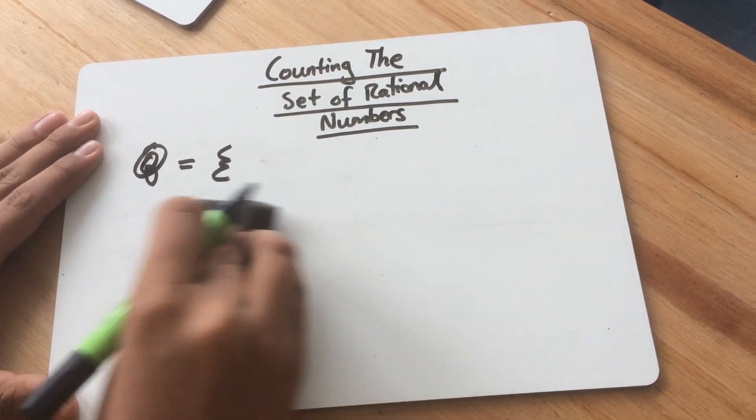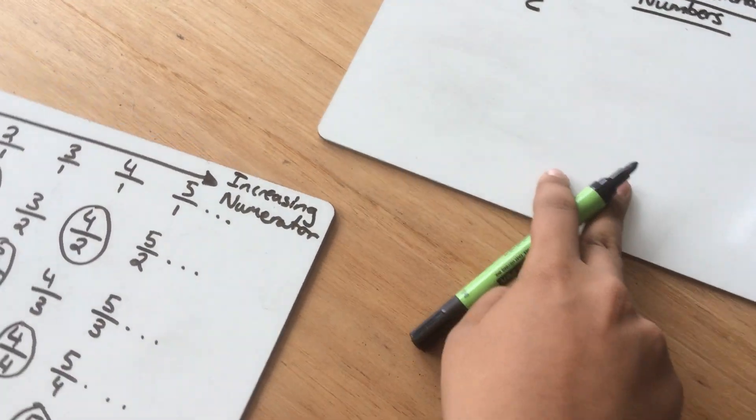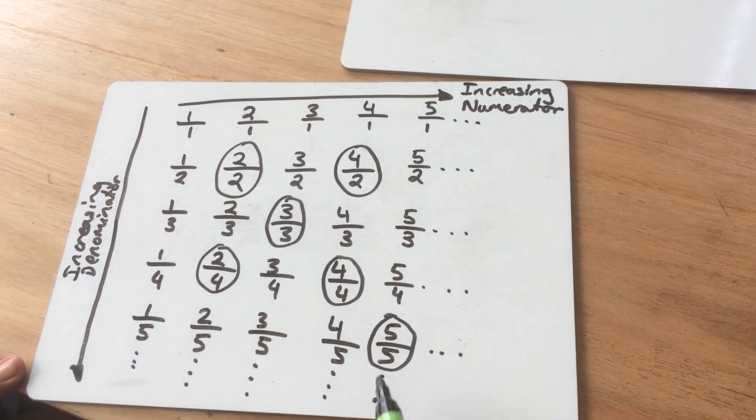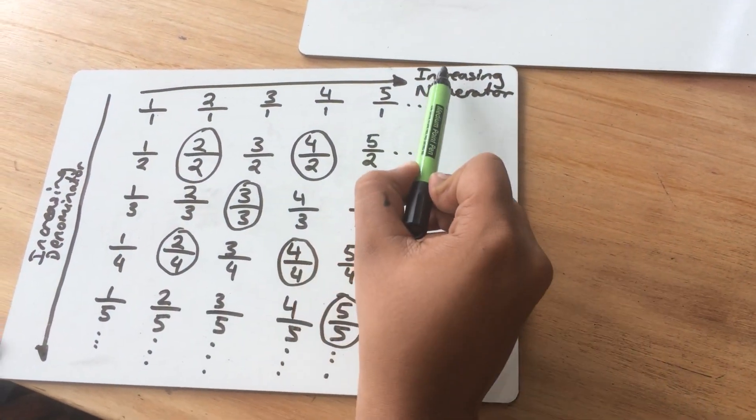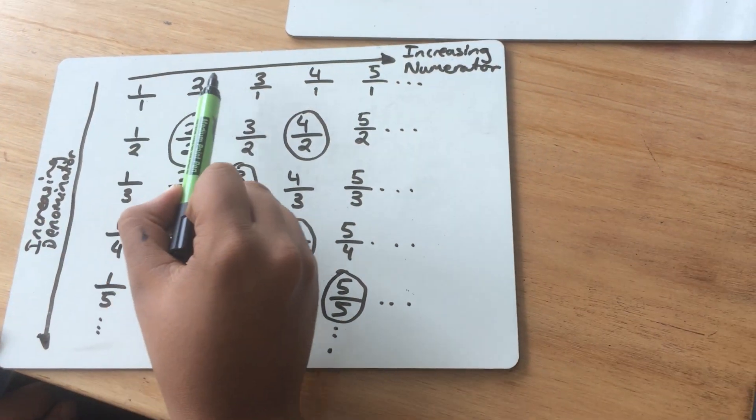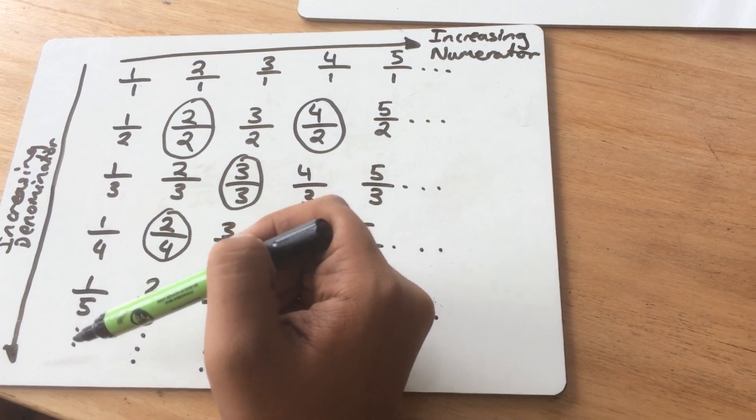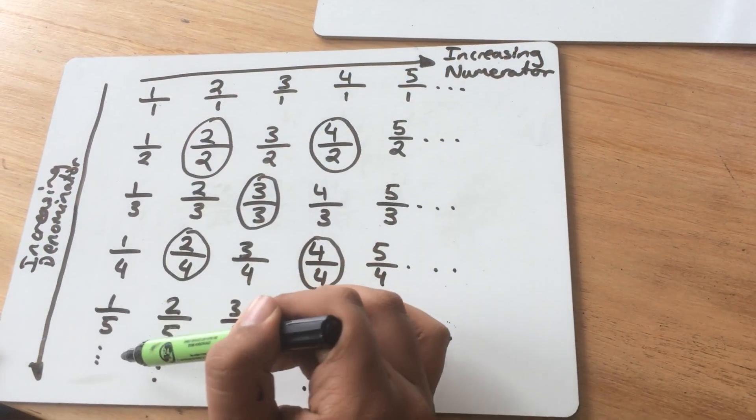The best way to do this is to do it in the form of a chart. In this chart, all the fractions have been placed in such a way that going horizontally means increasing the numerator, so from 1 to 2 to 3 to 4 to 5. And then going vertically means increasing the denominator, so that's from 1 over 1 to 1 over 5.